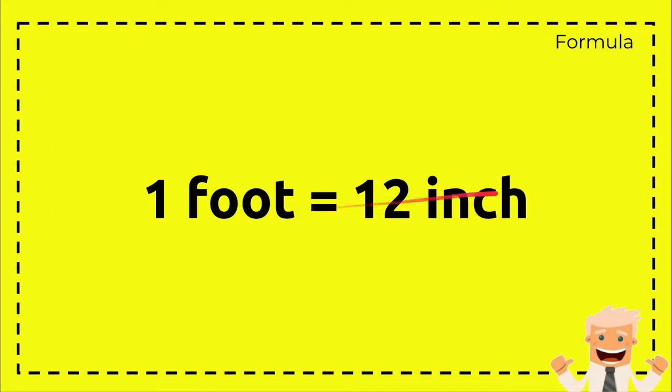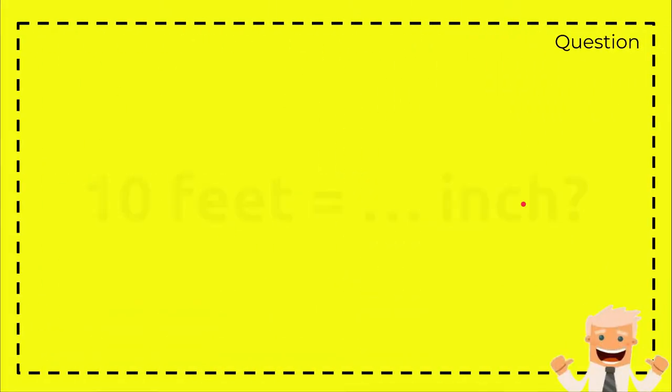This is the formula for conversion between foot to inch: 1 foot equals 12 inches. And here's the question.